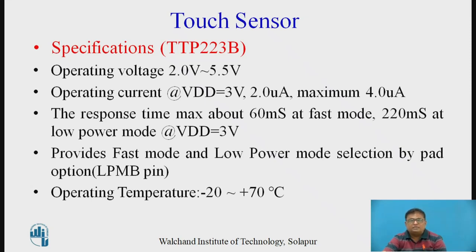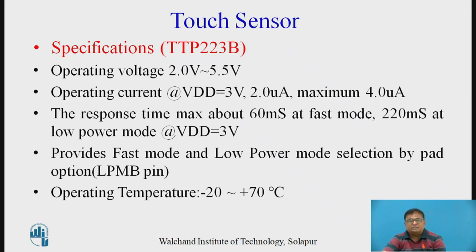We can operate this sensor in two modes: fast mode and low power mode. To select one of these modes, an option is provided on the LPMB pin. The operating temperature of the sensor is minus 20 to plus 70 degrees centigrade.